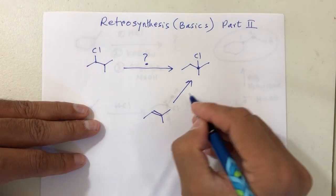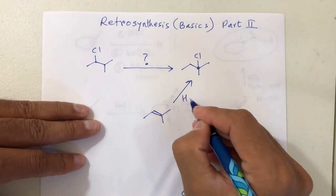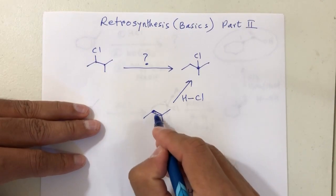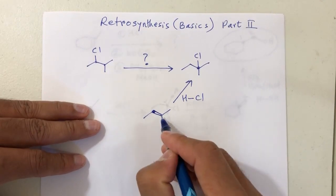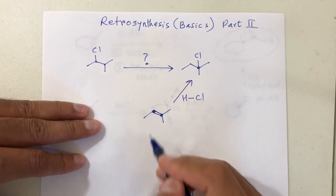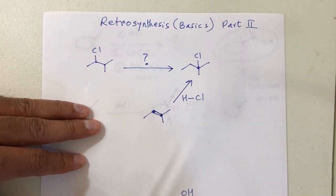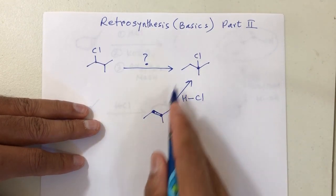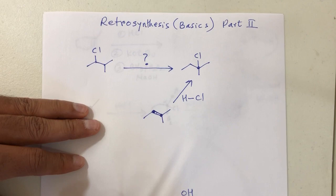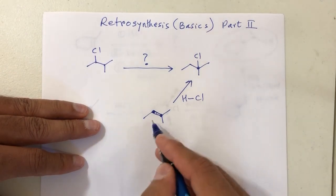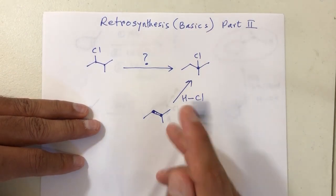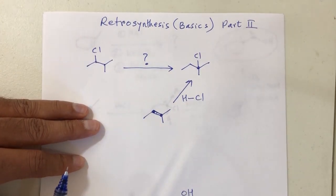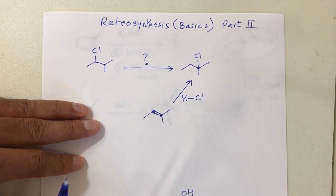If I add HCl, H will go on this carbon and chlorine will go on this carbon. So if I add HCl across a double bond, I can get this product. Going a step backwards most of the time will take care of the situation — that's the key.